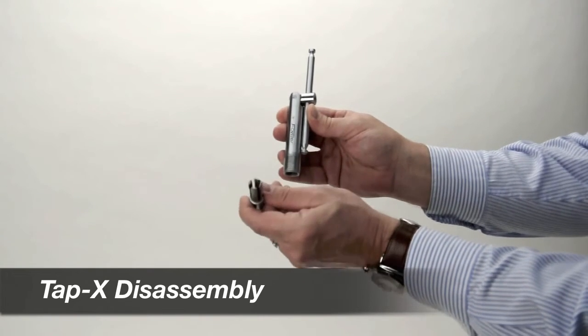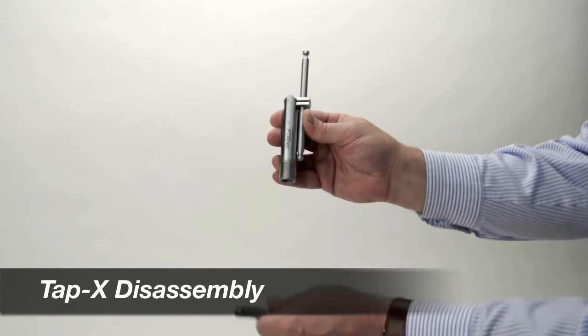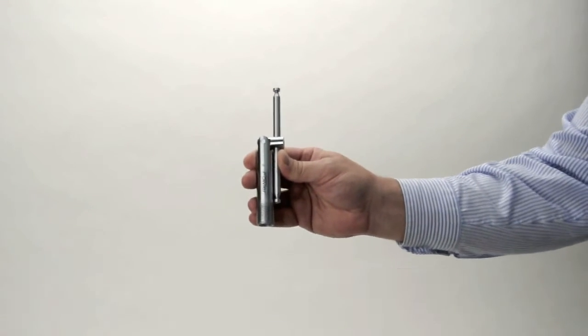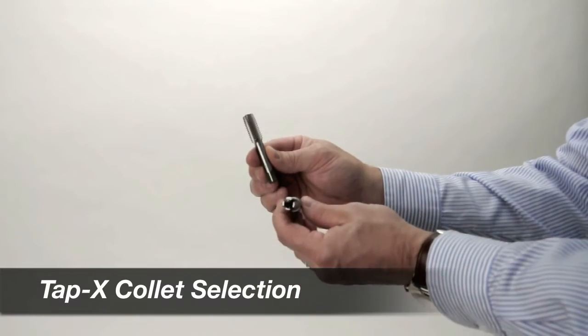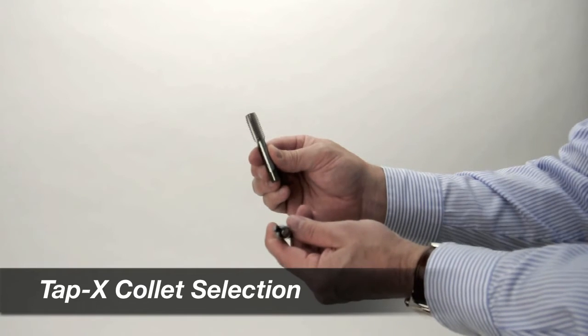The small side fits taps in the 1/8 to 1/4 inch range. The large side fits taps from 1/4 to 1/2 inch. Be sure to select the appropriate sized end of the collet for your tap.